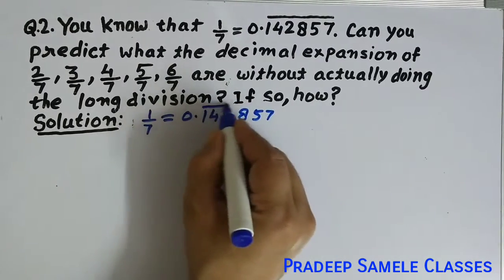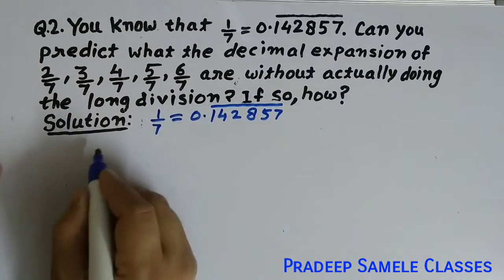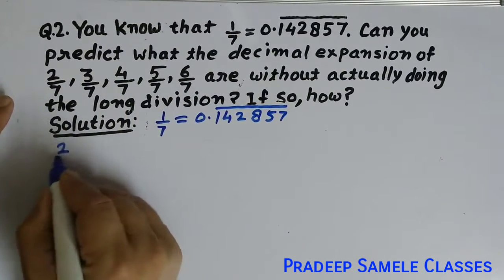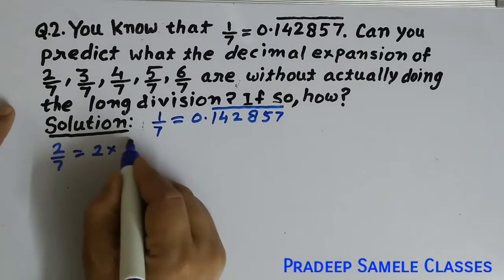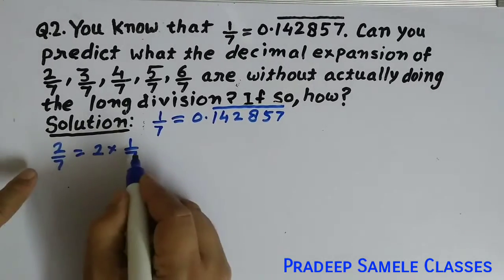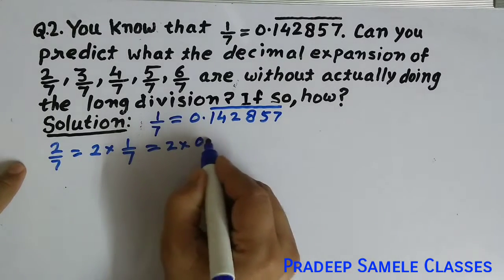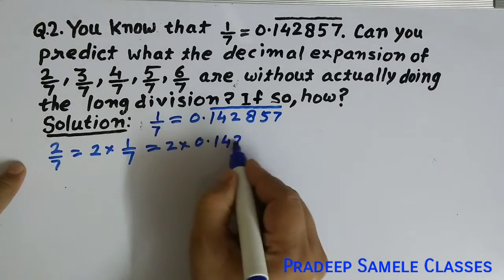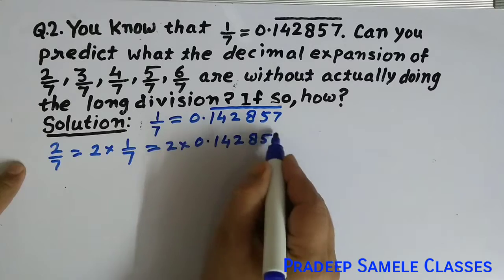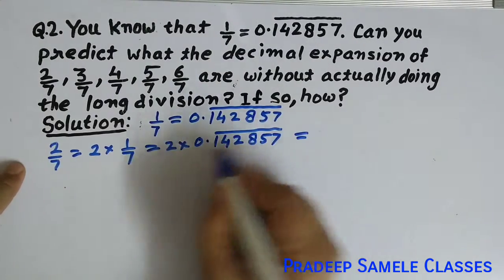Now we will find the value of 2 by 7. So 2 by 7 is equal to 2 into 1 by 7. We substitute the value 0.142857 bar and multiply it by 2.